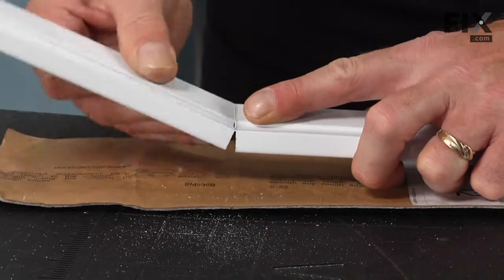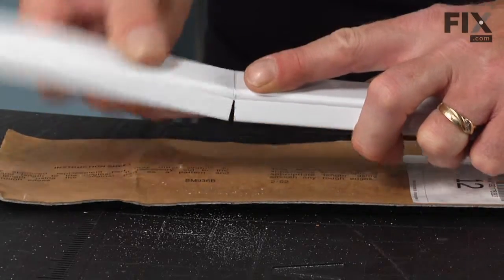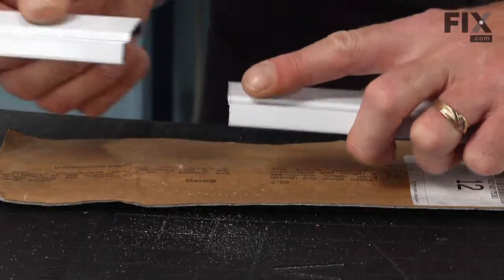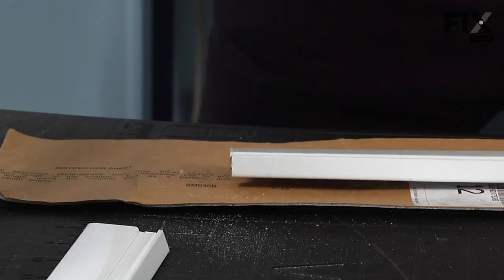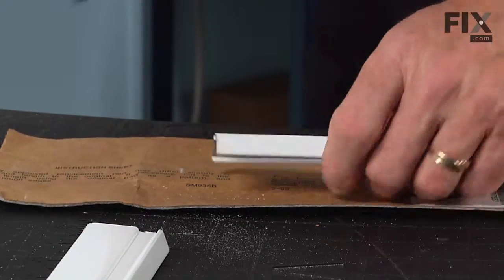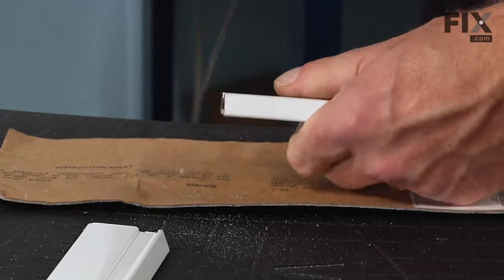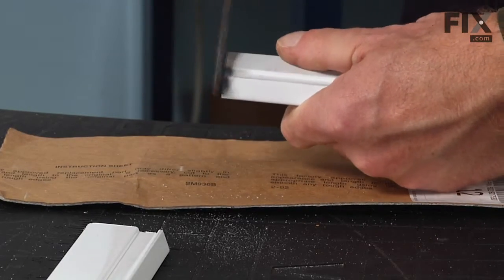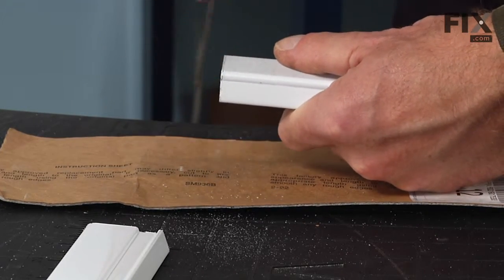you can just tilt back and forth until it snaps free. Then with our flat file, we'll take the burrs off those edges and make sure we square everything up nice and square.